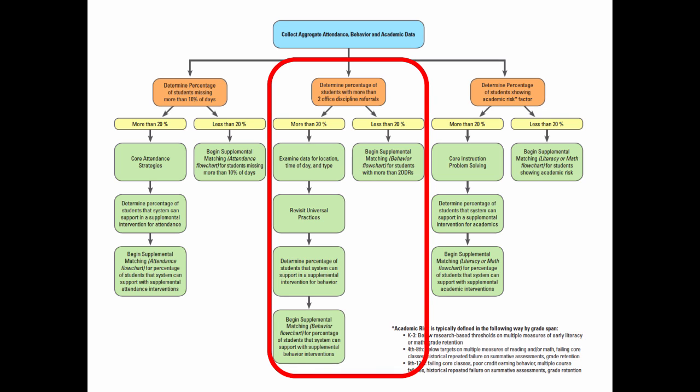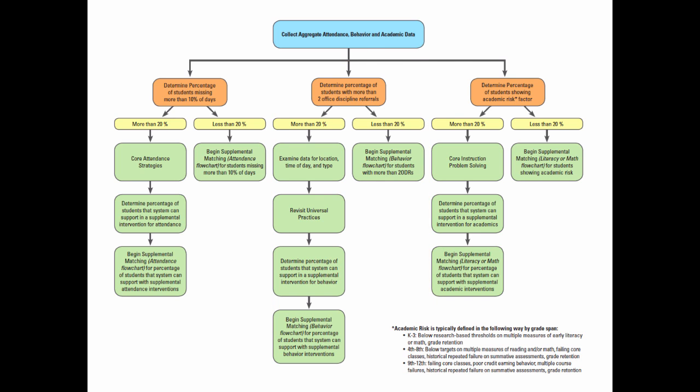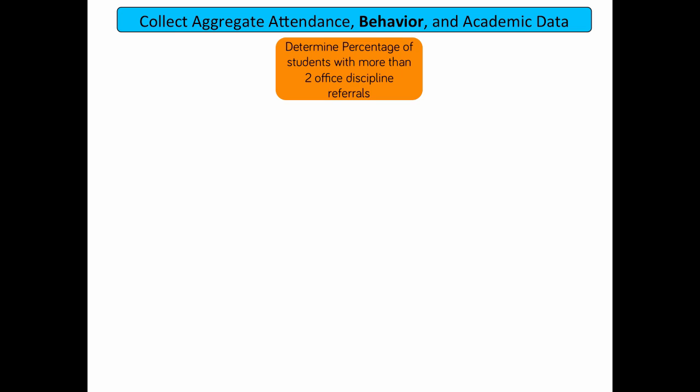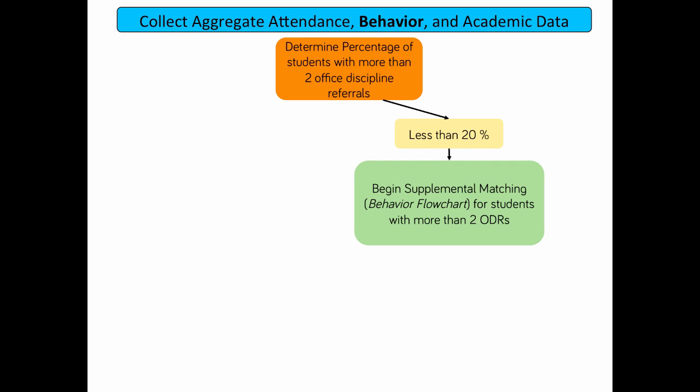Let's continue building our flowchart by focusing on the middle section: behavior. For behavior, we will examine office discipline referral data to identify the percentage of students who have more than two office discipline referrals. If that percentage is less than 20% of the grade or school, then we can begin matching those students to supplemental interventions. We will visit specific behavior strategies and interventions in Module 2.3.